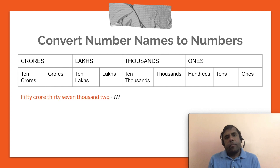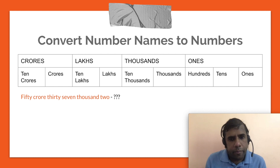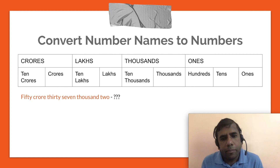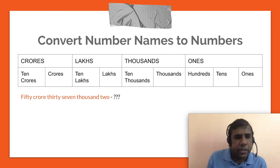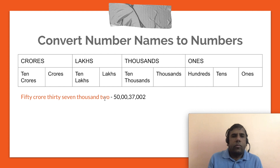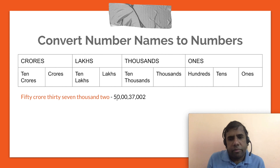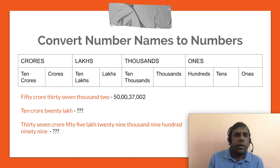The other way around is also possible: you are given a number name in text format and want to find the actual numeric representation. For example, given 50 crore 37 thousand 2: 50 goes in the crores place, zeros for lakhs, 37 for thousands, and 002 in the ones period — giving us 50,00,37,002.